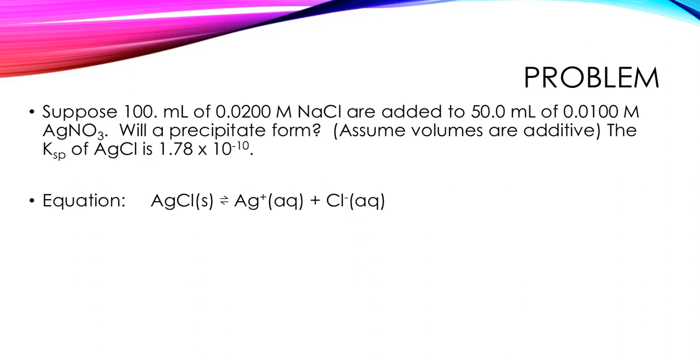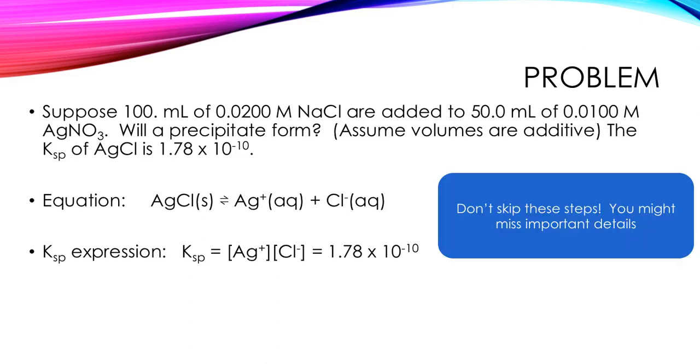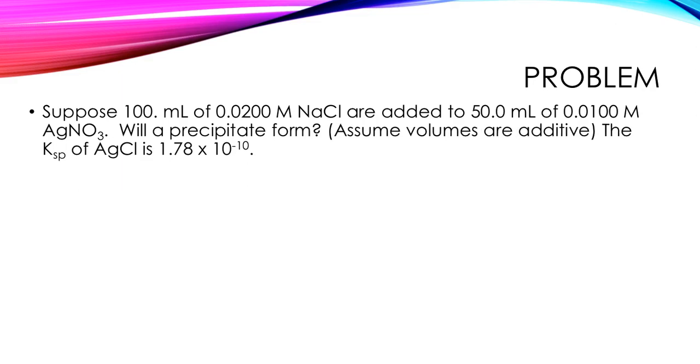The next thing we need is our equilibrium constant, our KSP expression. We were given the value, but you really don't want to skip these steps because the ions aren't always going to combine in a one-to-one ratio. If there was a subscript in the formula for the solid, those are coefficients in the balanced equation, which become exponents in the KSP expression. And you're going to miss all of that if you skip steps. It's a big risk. Don't do it.